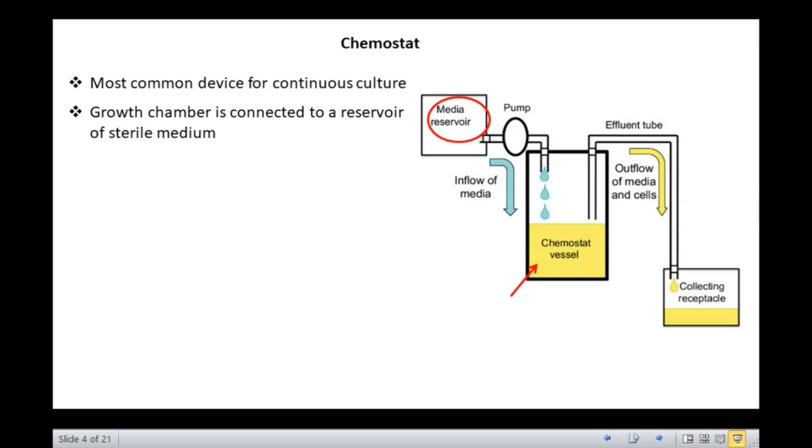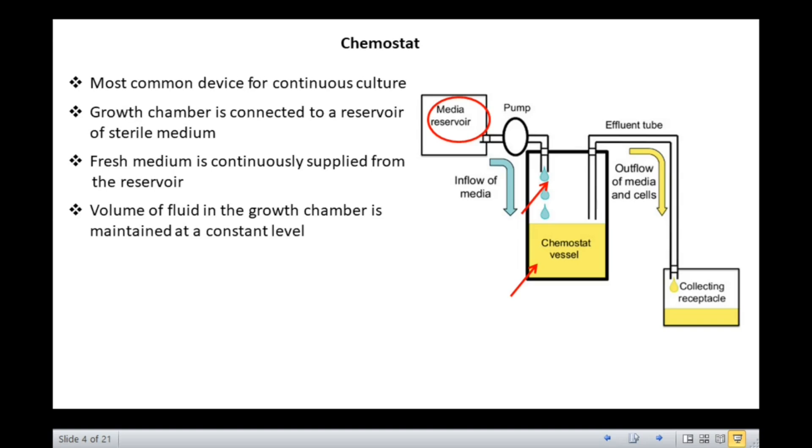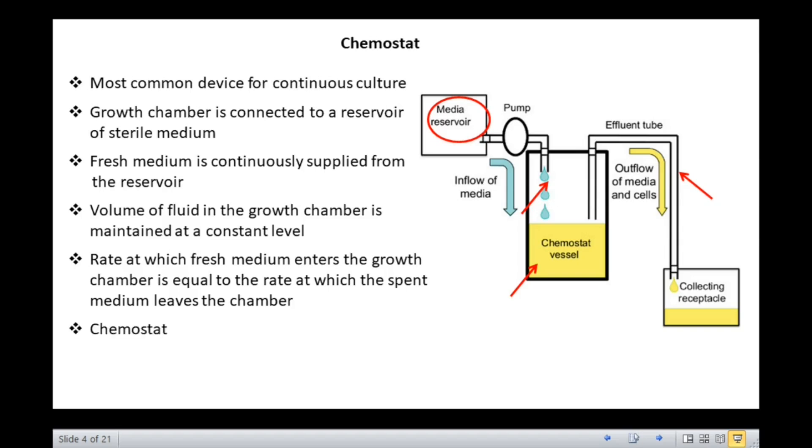Once growth is initiated, fresh medium is continuously supplied from the reservoir. The volume of the fluid in the growth chamber is maintained at a constant level by an overflow drain. The rate at which fresh medium enters the growth chamber is equal to the rate at which the spent medium leaves the chamber. As stated above, the chemostat is mainly controlled by concentration of a limiting nutrient and dilution rate.